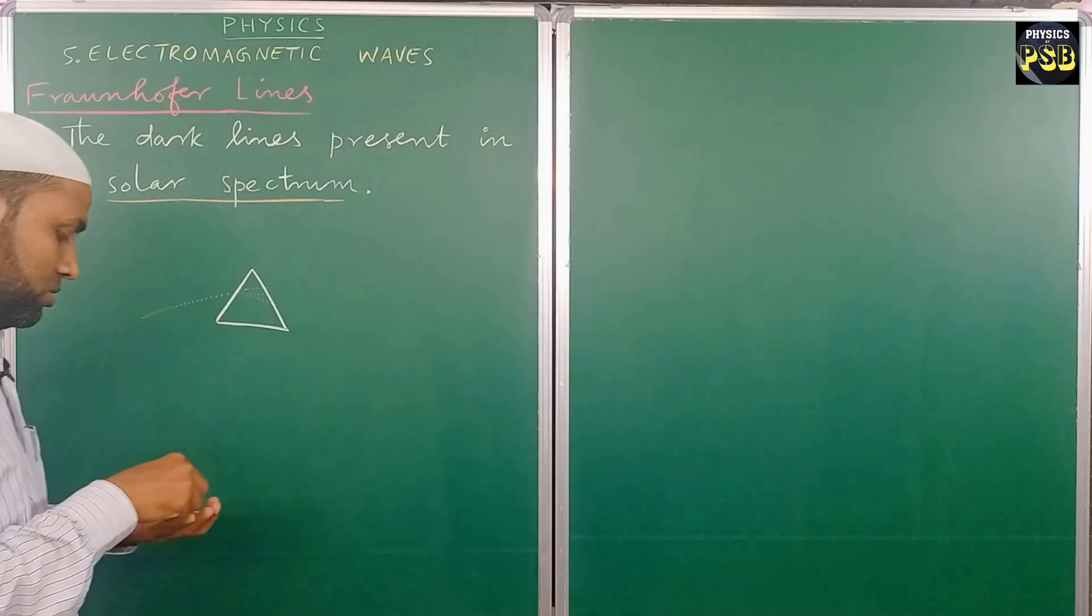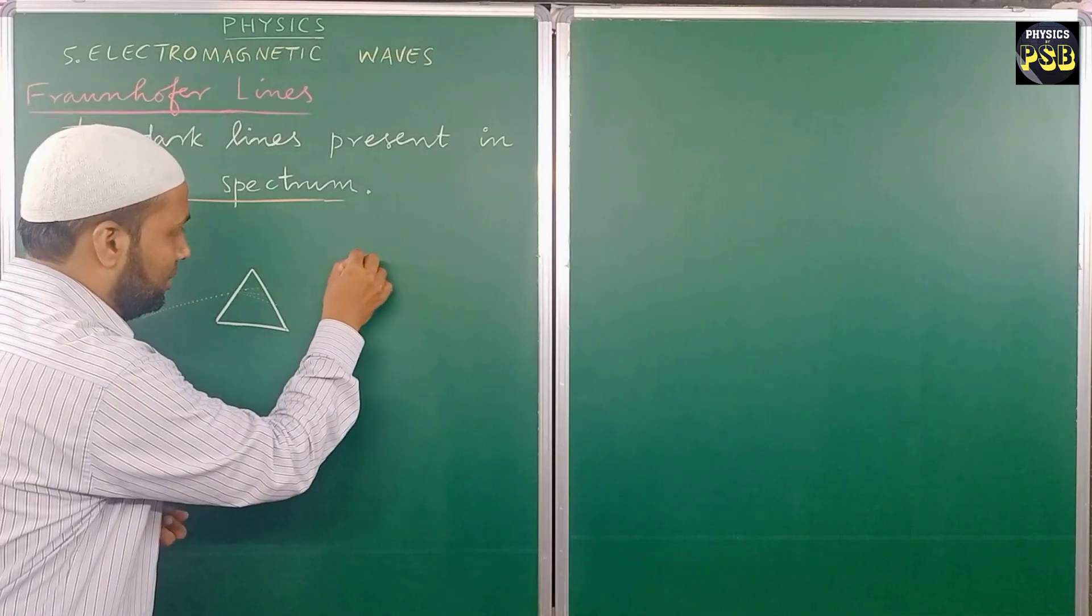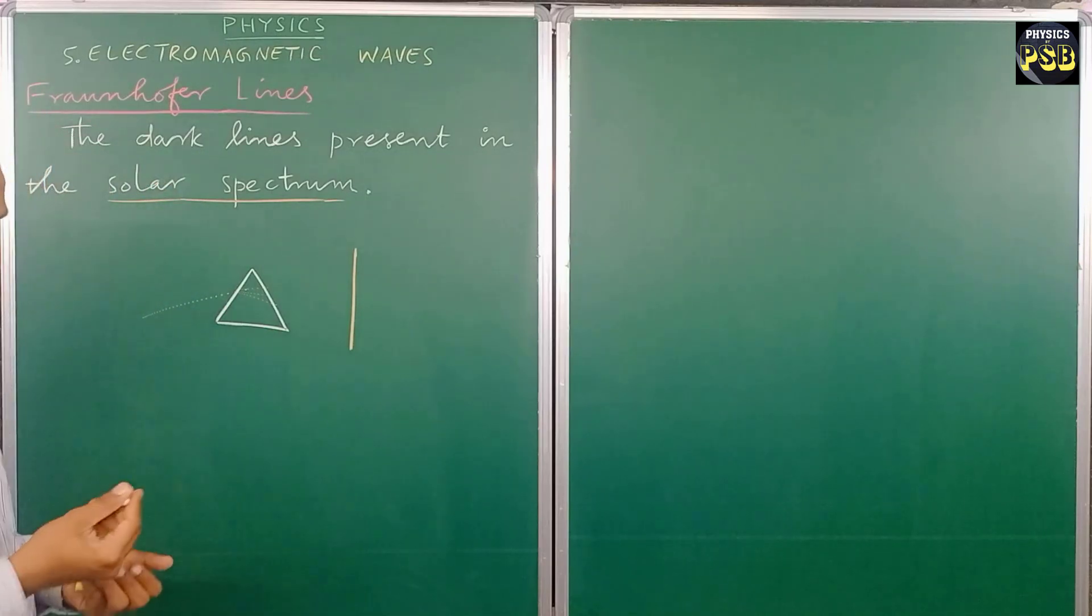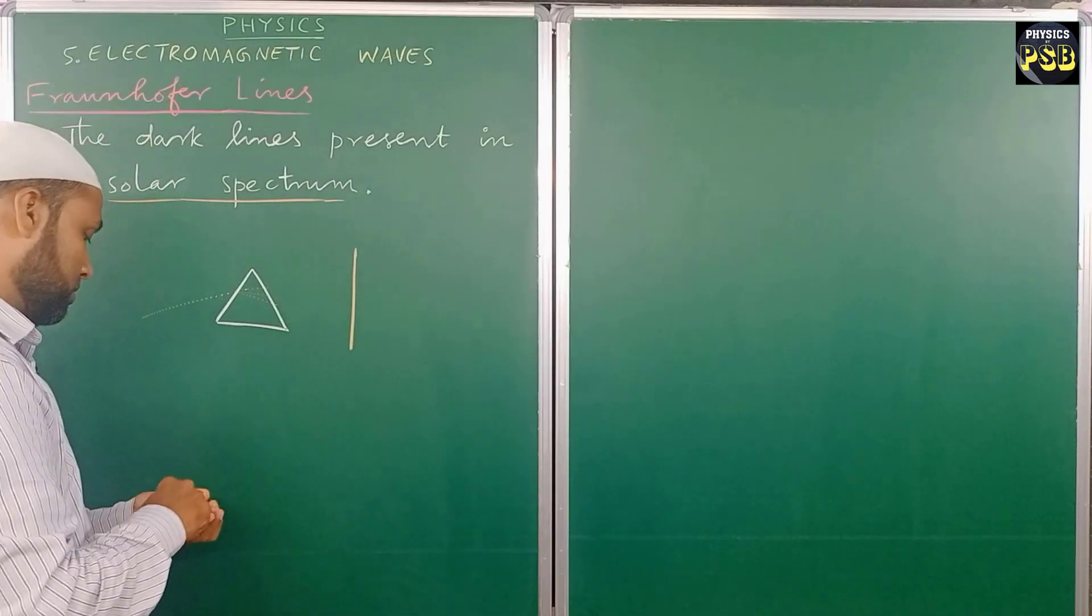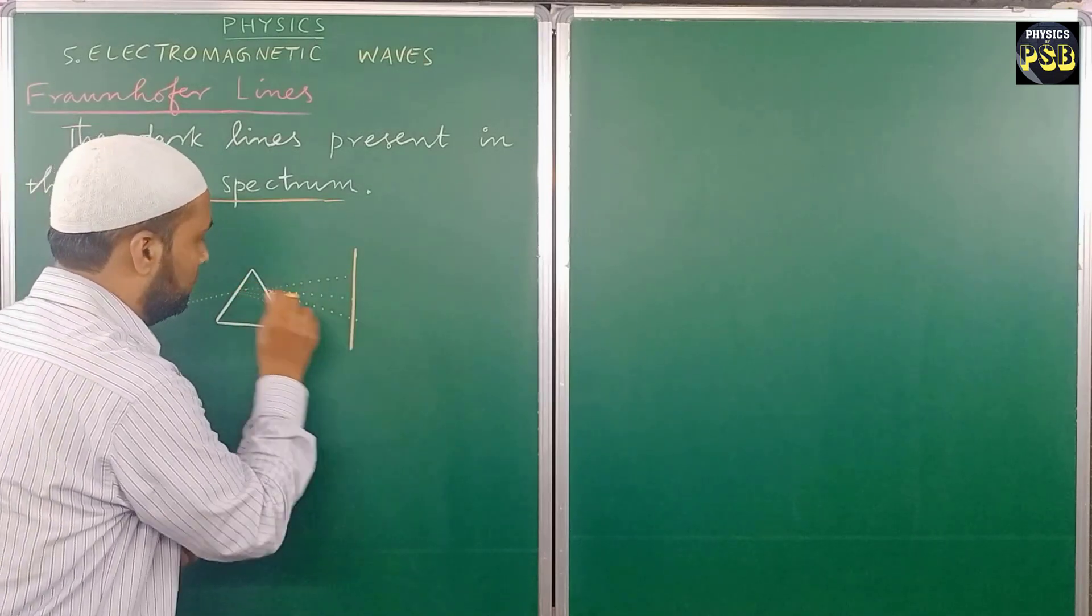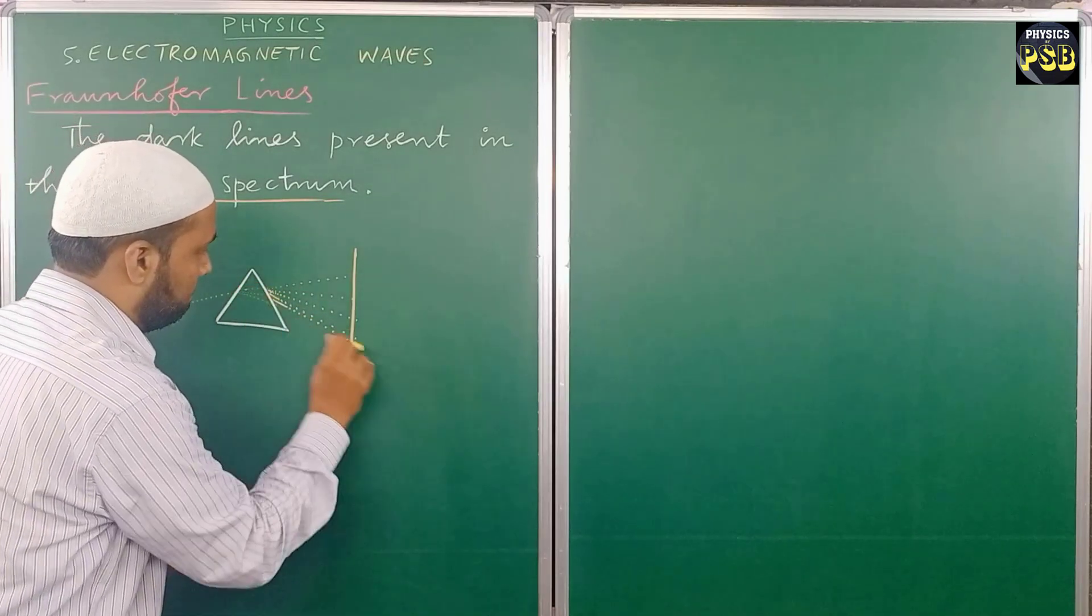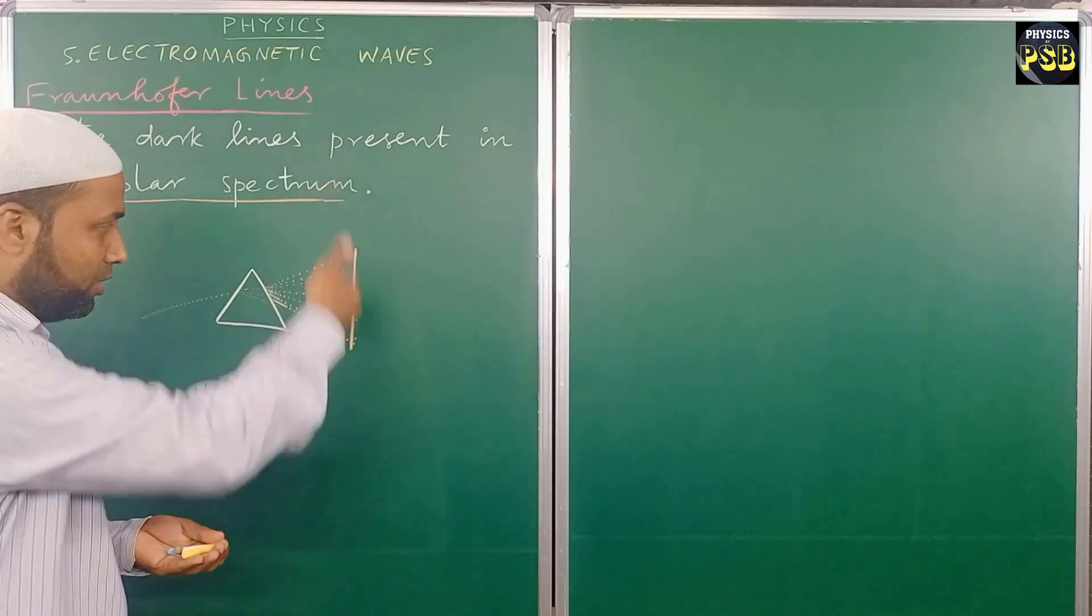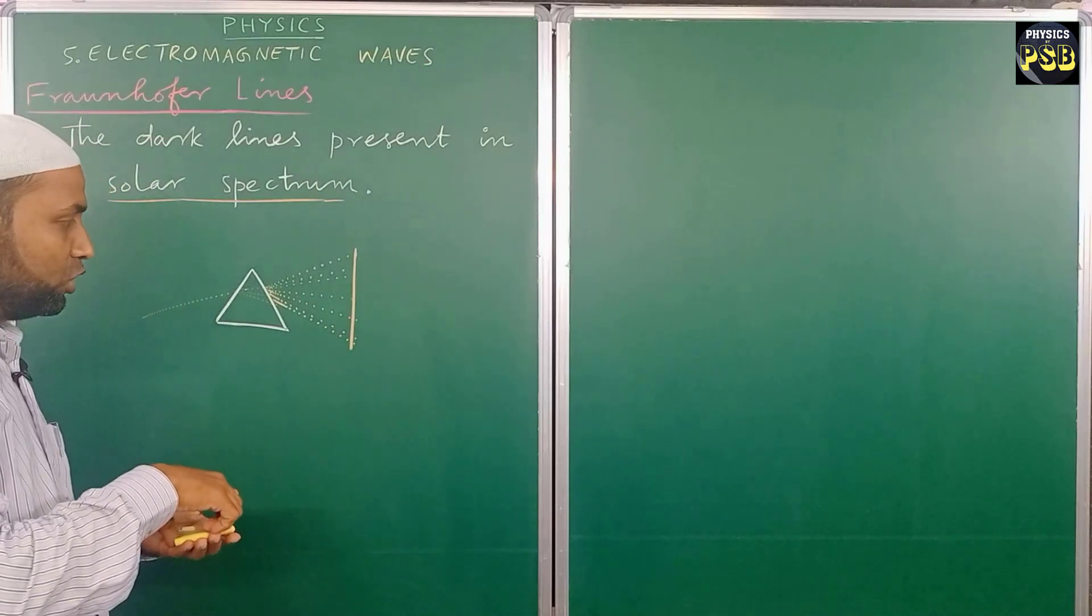It disperses into its constituents, and on a screen we get different colors. The seven different colors which are obtained on the screen constitute the solar spectrum.